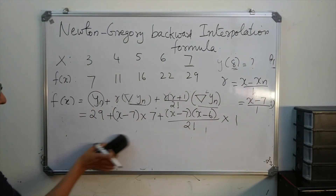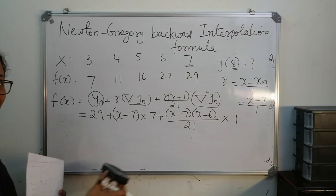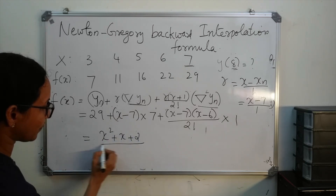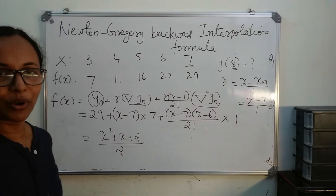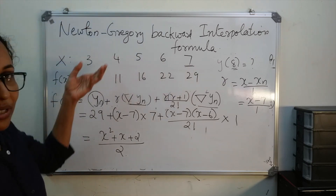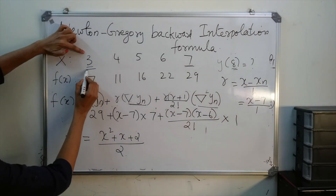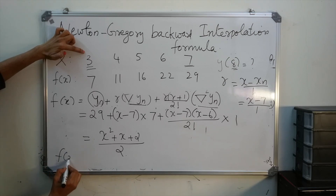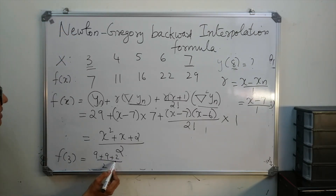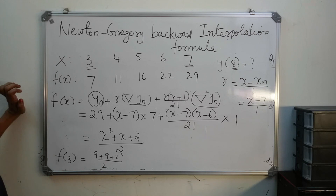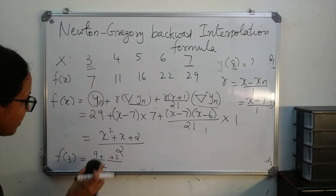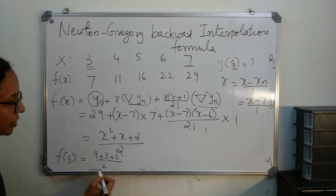Simplifying, you multiply and add all terms to get the interpolating polynomial: (x squared + x + 2)/2. To verify, for x = 3: f(3) = (9 + 3 + 2)/2 = 14/2 = 7, which matches the given data.